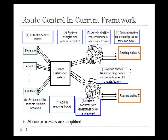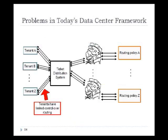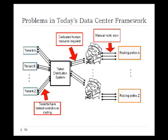The above process is simplified, but there are three major problems with this framework. First, tenants have very little control of routing — they can only specify requirements in a ticket, and in a system where the ticket propagates over several distribution systems, requirements may be lost in translation. Second, there's a dedicated human resource required per ticket. And lastly, there's a lot of manual configuration on the part of the network admin, so ticket resolution time can be very long.